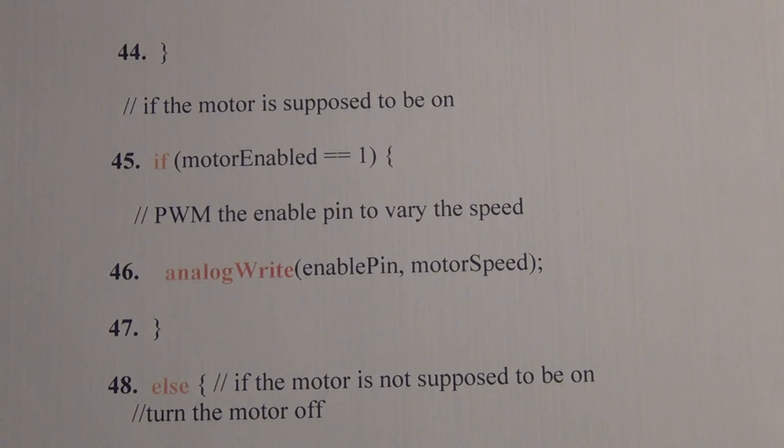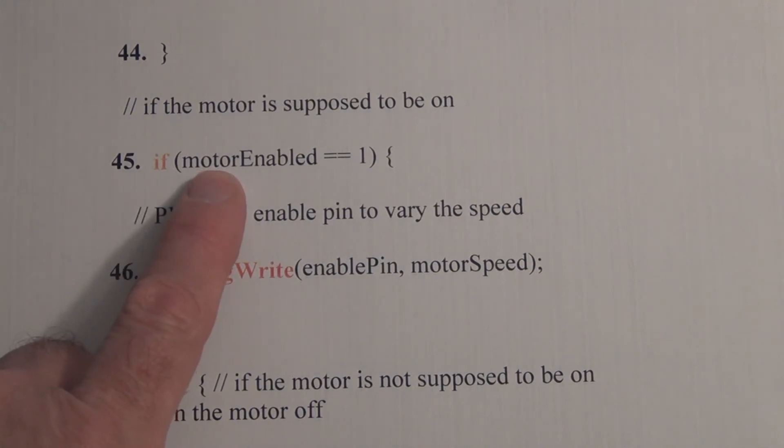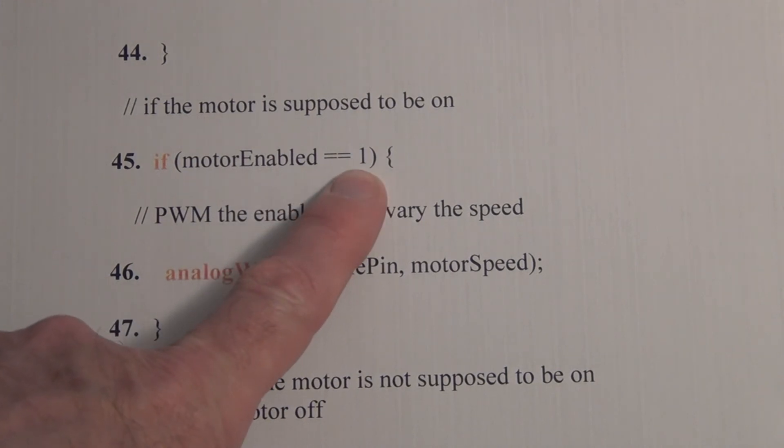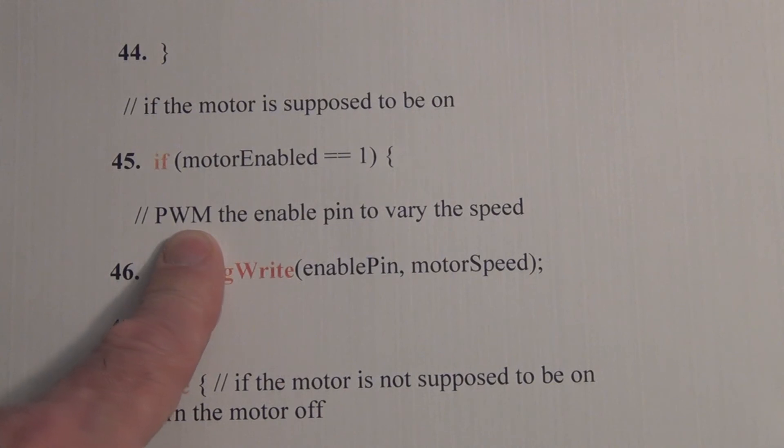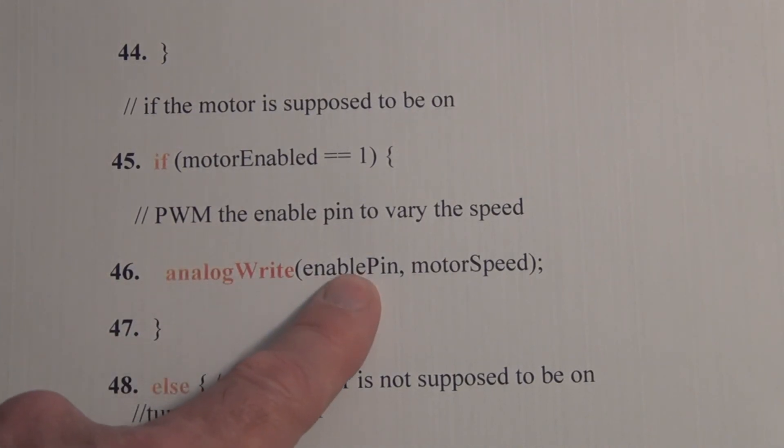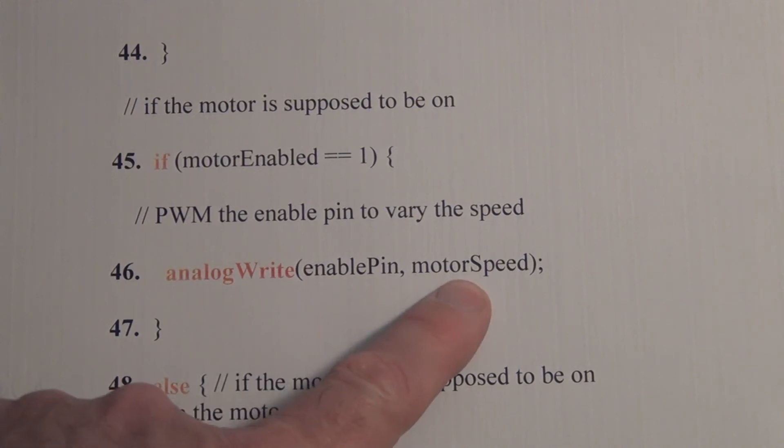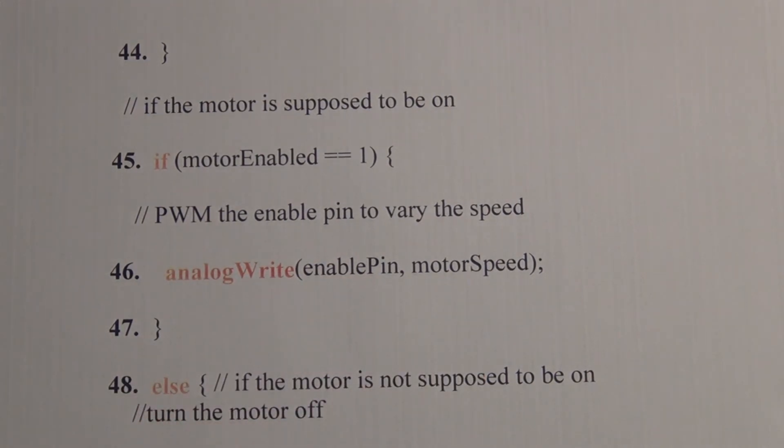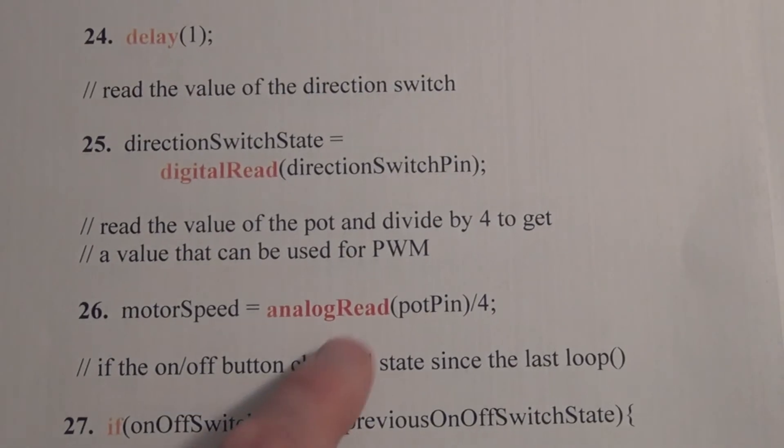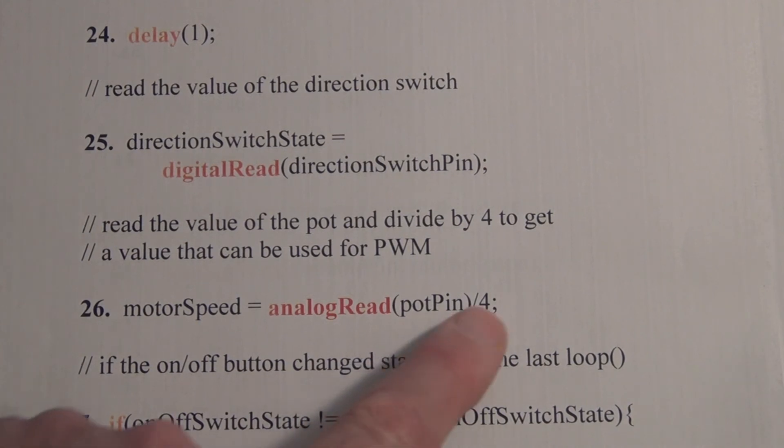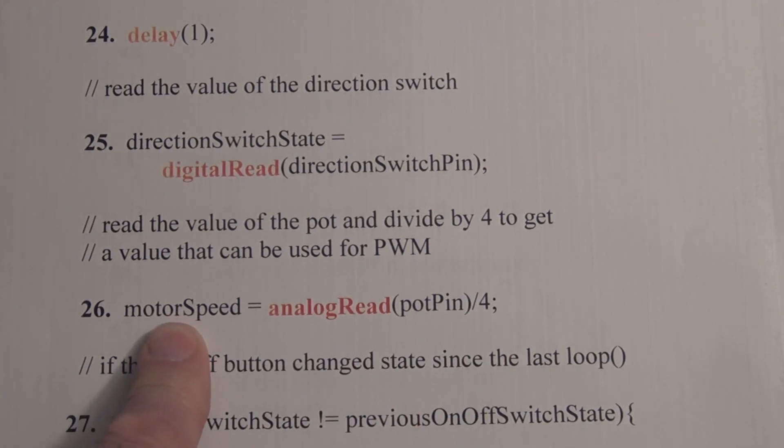The next part of the program controls the speed of the motor so we check to see if motor enabled is equal to one so if there's a one on pin one on the H bridge it's enabled and then we can return a pulse width modulated signal. So we'll do an analog write and we get two arguments here we've got the pin and the variable with the value in it so enable pin is pin nine and motor speed is a calculated value from the analog read that we did earlier so we did an analog read on A0 divided by four that returns a usable value for pulse width modulation into the variable motor speed.